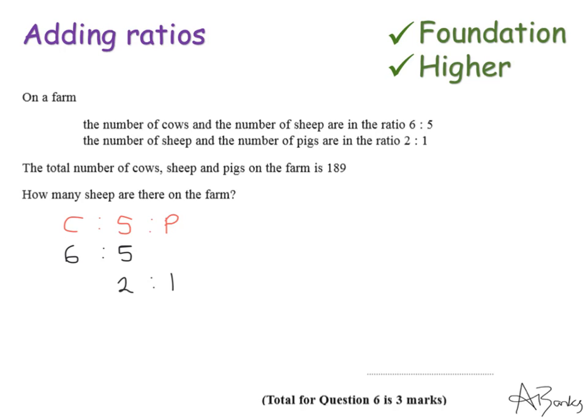So the common multiple of 2 and 5 that I'm going to use is 10. I almost think of this as adding fractions and subtracting fractions when you find a common denominator. Well it's like this with adding ratios. I need a common number for the 5 and the 2 and that's going to be 10.